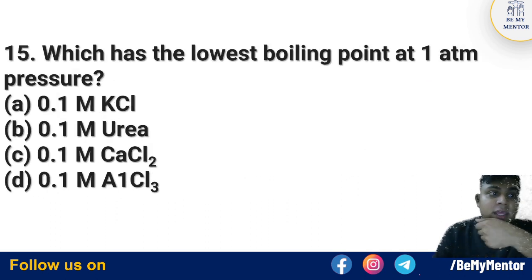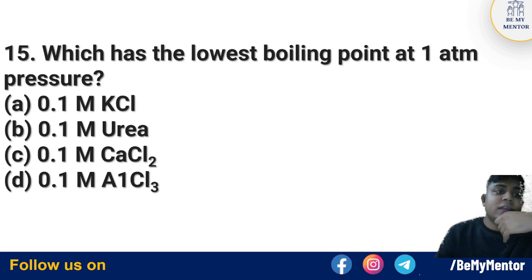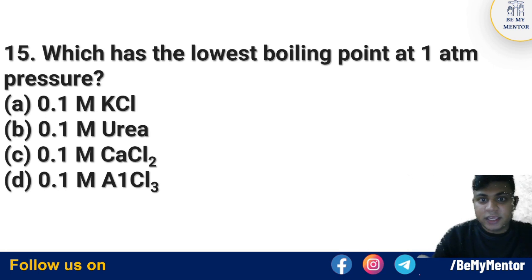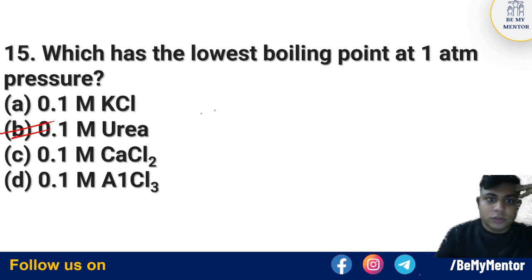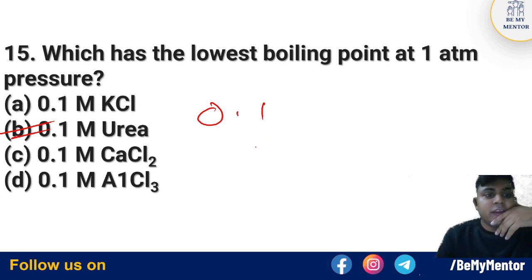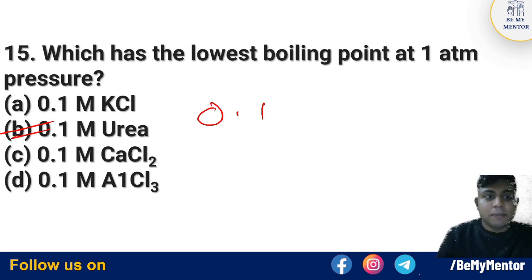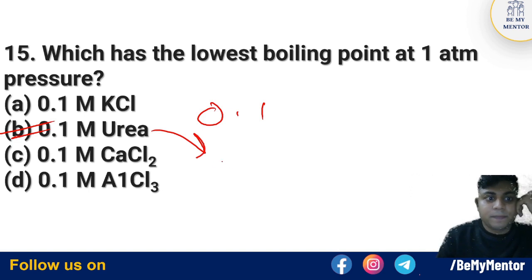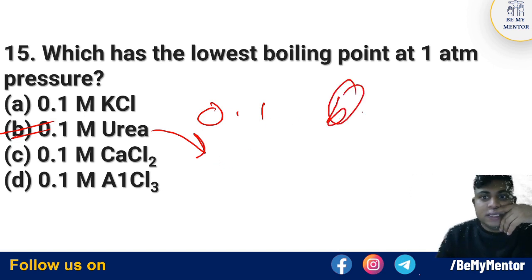Question number 15: Which has the lowest boiling point at 1 atm pressure? Since molarity is the same at 0.1 for all options, we need to check molecular mass. The answer is urea, because we check from the molecular mass. Option number B is the correct answer — urea at 0.1 molarity.